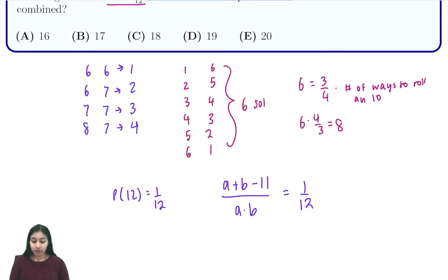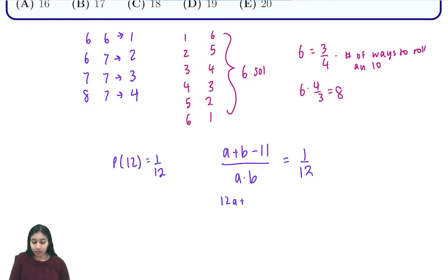So here all we do is cross multiply. We'll see that twelve a plus twelve b minus one thirty-two is equal to a b. Rewriting this gives us a b minus 12a minus 12b plus 144 is equal to 12. And now we can use Simon's Favorite Factoring Trick to get (a minus 12) times (b minus 12) is equal to 12.